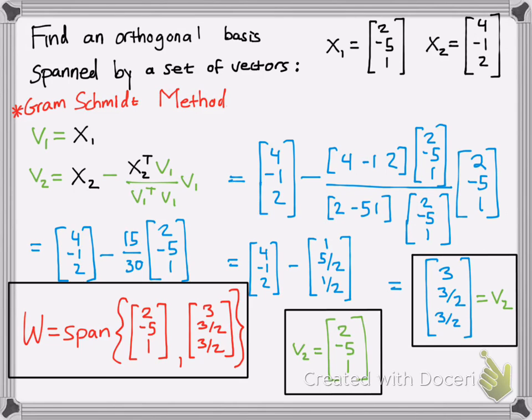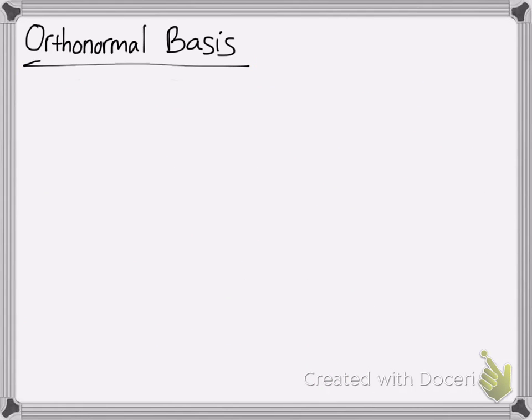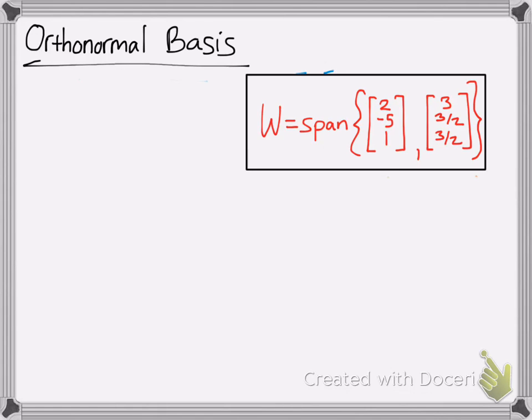And that's how you find the orthogonal basis. Now if you want to find the orthonormal basis, all you got to do is take that span of vectors and divide by its magnitude to make it a unit vector.